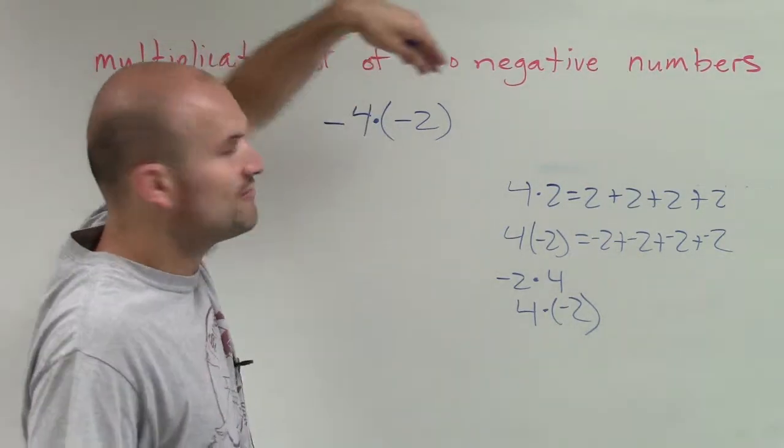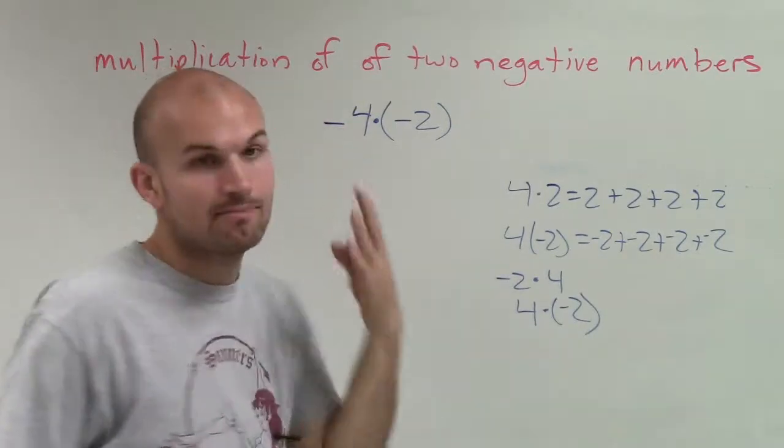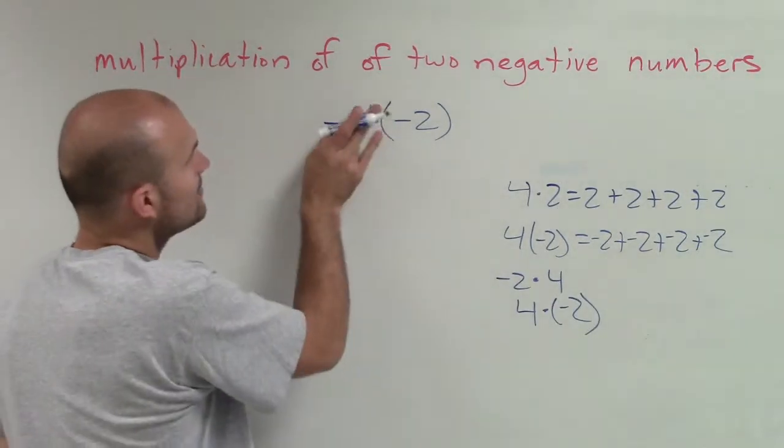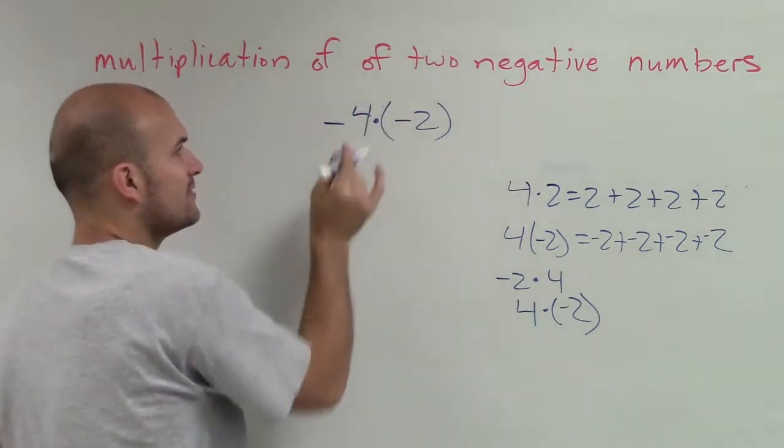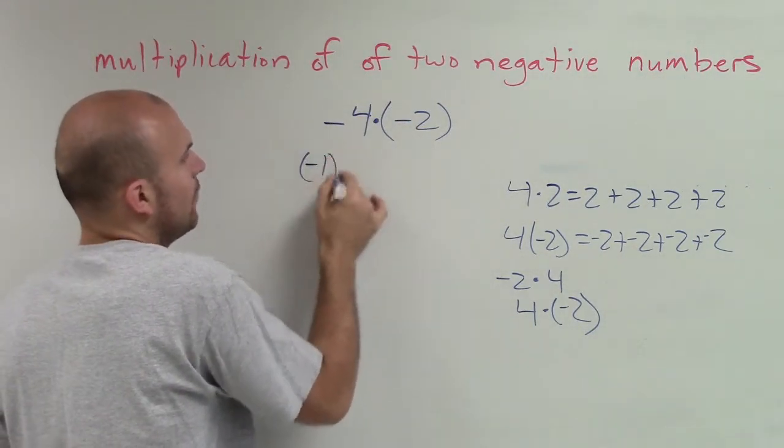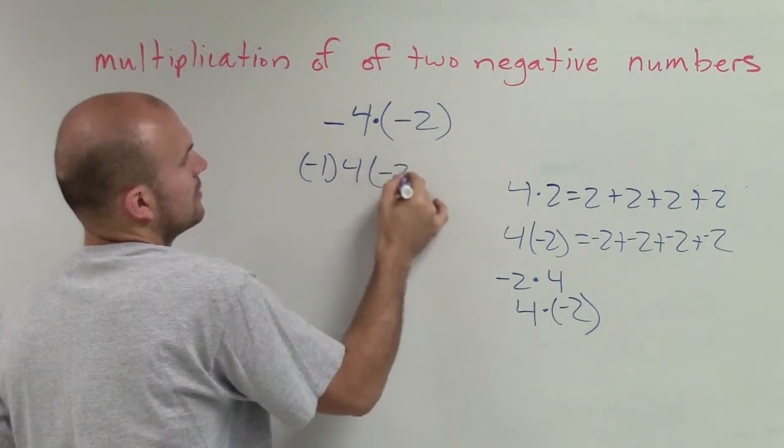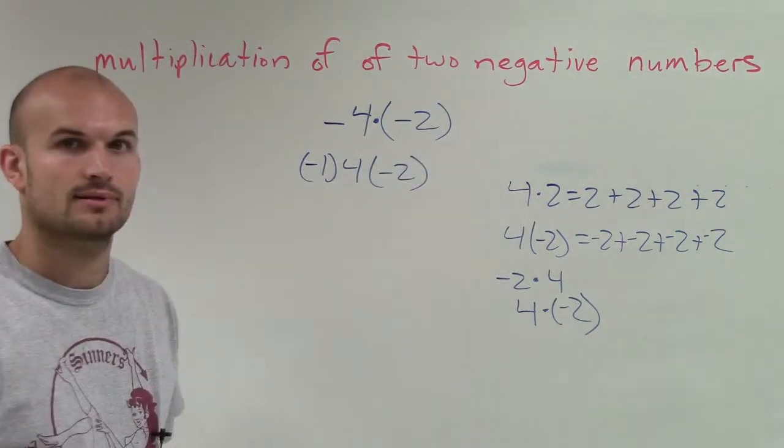So when I have negative 4 times negative 2, what I'm going to use is the multiplication property of negative 1. I am going to pull out a negative 1. So I'm going to say negative 1 times 4 times negative 2.